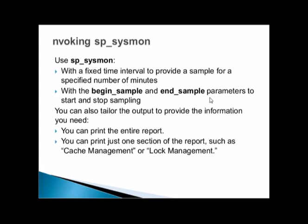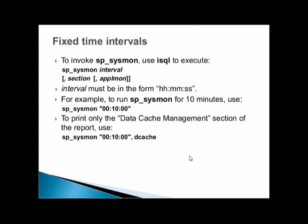Invoking sp_sysmon: you can use it with a fixed time interval to provide a sample for a specified number of minutes, with the begin_sample and end_sample parameters to start and stop the sampling. You can also tailor the output — print the entire report or just one section such as cache management or lock management. You can choose to run the entire report or only selected parts.